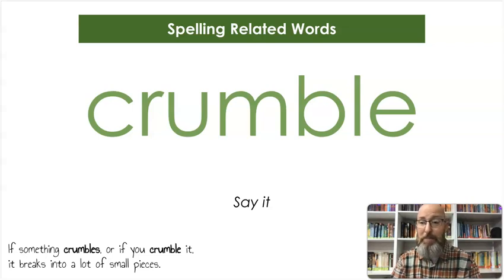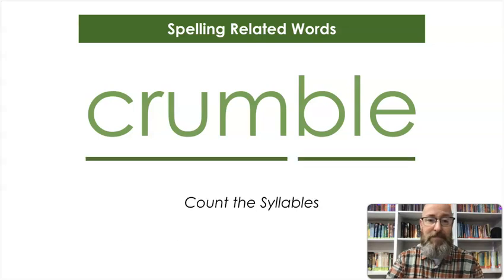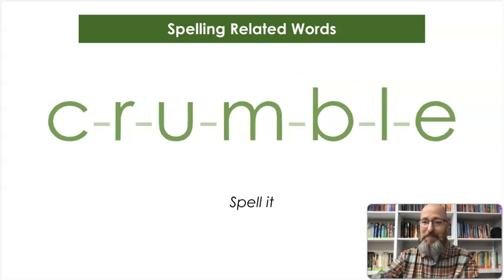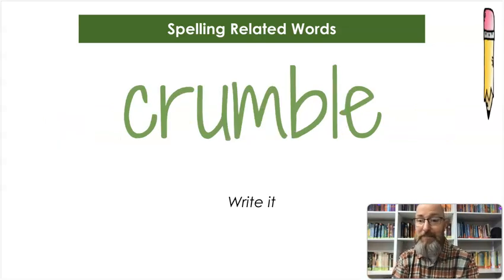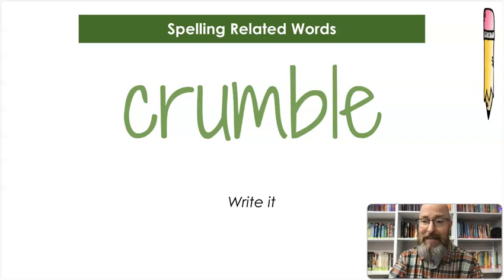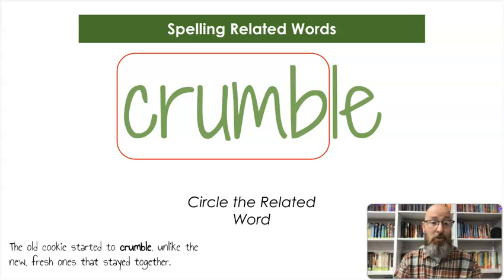Our next word is crumble. If something crumbles, or if you crumble it, it breaks into a lot of small pieces. Let's count the syllables — crum-ble, crumble. Let's spell it: C-R-U-M-B-L-E, crumble. And let's write it: C-R-U-M-B-L-E. We're going to circle the word crumb, which we did earlier — that's the related word. The old cookie started to crumble, unlike the new fresh ones that stayed together.